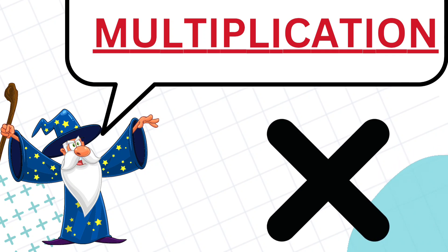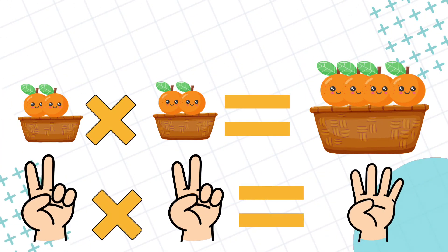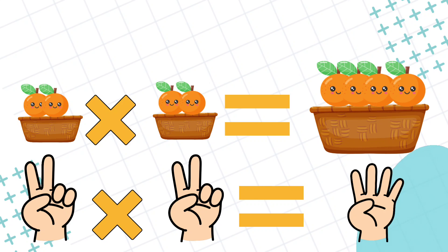This cross sign is for multiplication. Let's take another example. There are two baskets with two oranges each. So how many oranges are there in total? Two multiplied by two is four.